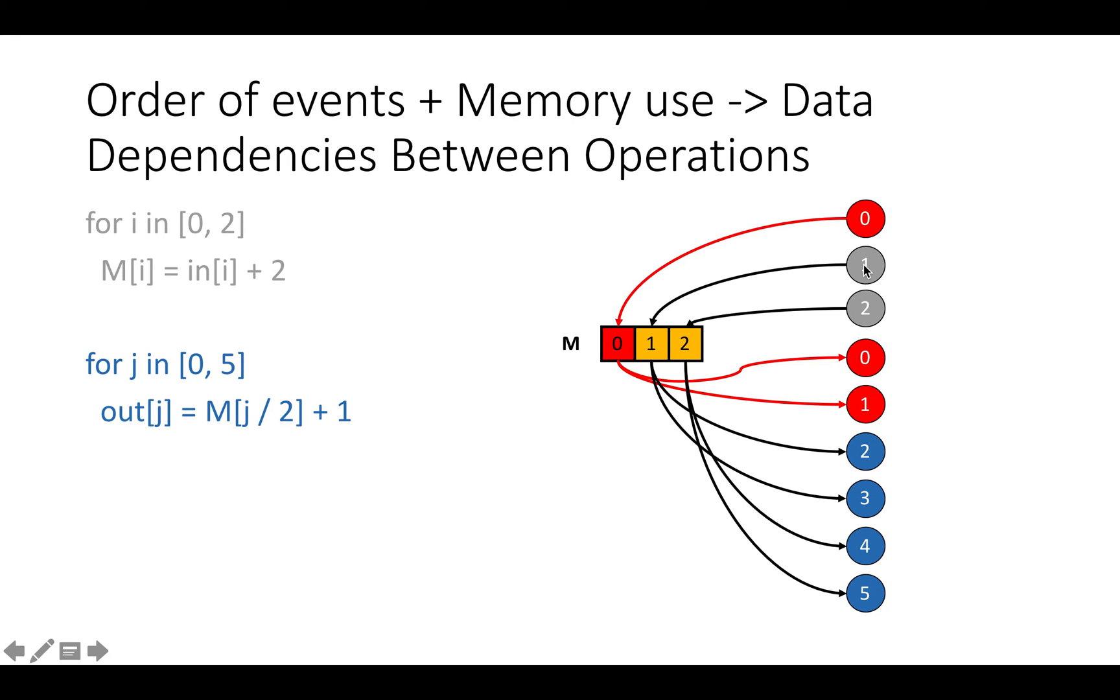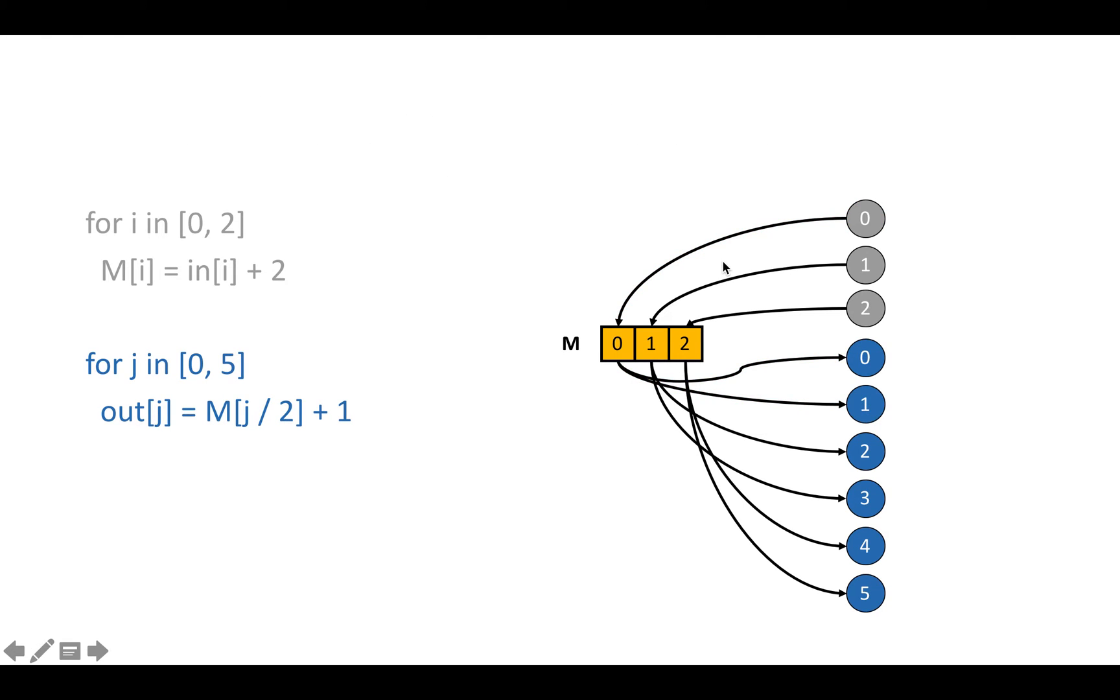So for example, the zeroth iteration of the producer loop, which is shown in gray as this dot with a zero in the middle, is going to write to the value M[0]. And then iterations zero and one of the consumer loop, shown as these blue dots labeled with zero and one, are going to read from value zero, and so on for iteration number one and two of the producer and iterations two, three and four, five of the consumer.